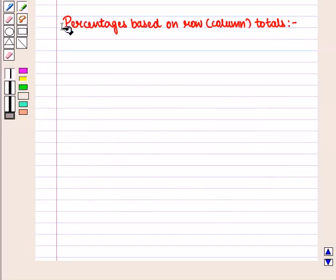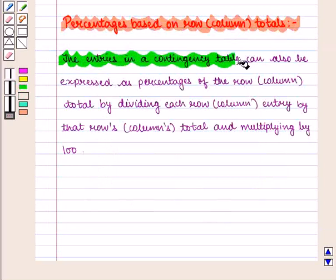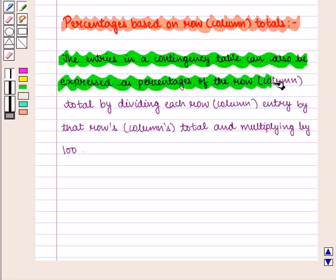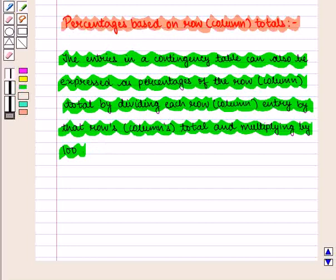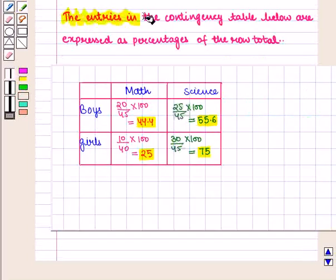Now we are going to discuss percentages based on row totals or column totals. The entries in the contingency table can also be expressed as percentages of the row or column total by dividing each row or column entry by that row's or column's total and multiplying by 100. The entries in the contingency table below are expressed as percentages of the row total.